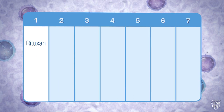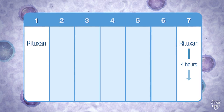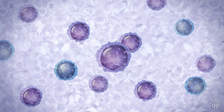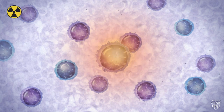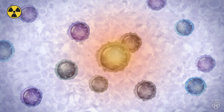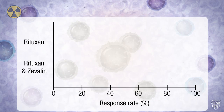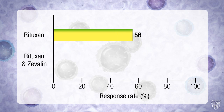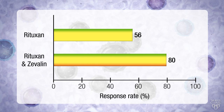Rituxan pretreatment at 7 days and 4 hours prior to Zevalin is necessary to clear circulating B-cells and other nonspecific binding partners in the body, allowing Zevalin to deliver radiation more specifically to lymphoma cells. This combined approach has been shown in studies to improve the overall response rate for therapy from 56% using Rituxan only to 80% with the use of Rituxan pretreatment with yttrium-90 Zevalin radioimmunotherapy.